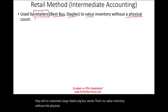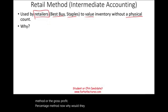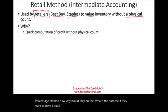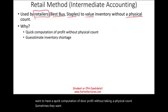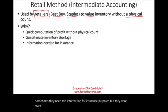This is very similar to the concept of the gross profit margin method or the gross profit percentage method. Why would they do that? Well, if they want to have a quick computation of their profit without taking a physical count, sometimes they want to estimate inventory shortage, or sometimes they need this information for insurance purposes but don't want to go through the count. So it's a way to estimate.